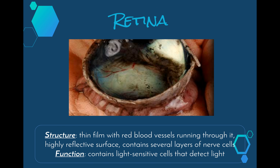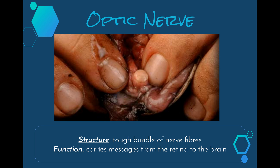Next we have the retina, which is a thin film with lots of red blood vessels running through it. It is a highly reflective surface that contains several layers of nerve cells. Those red blood vessels are exactly why you get red eye in photos taken straight on — the light reflects off those red blood vessels. The nerve cell layers include our rods and cones, which are the light-sensitive cells that detect light and convert it into an electrochemical signal to send to the brain via the optic nerve.